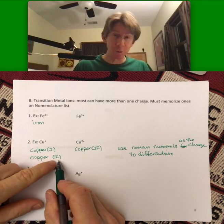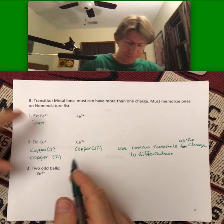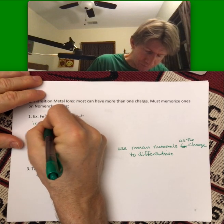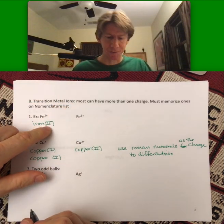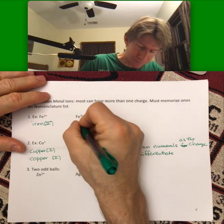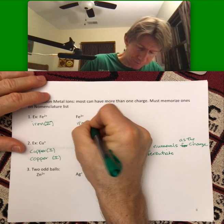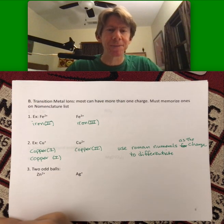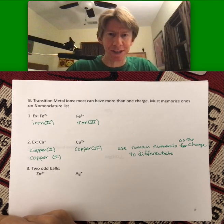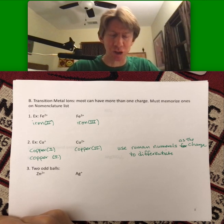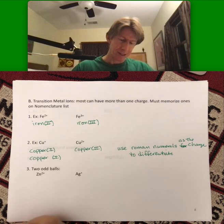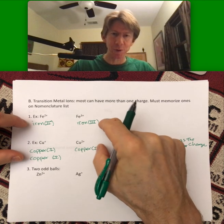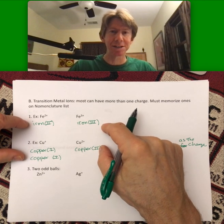So and we'll see that. But iron has a charge of two, so it gets a Roman numeral two. Iron three has a charge of three, it gets a Roman numeral three. The thing in parentheses is the charge. And that's going to be for almost all of the transition metals.